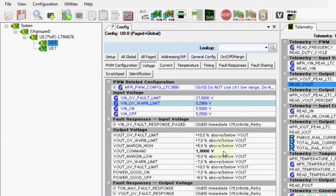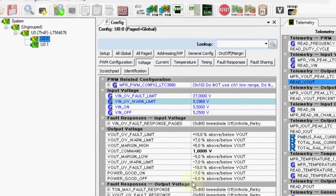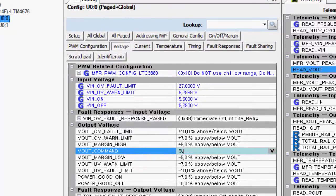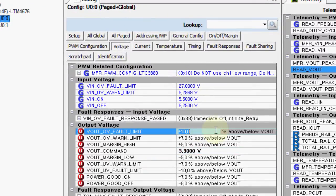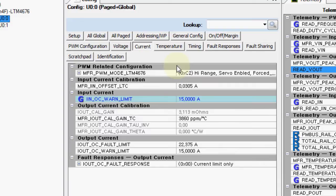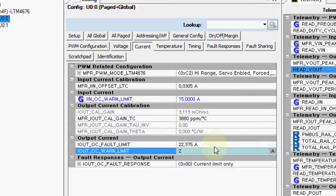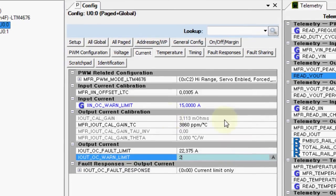We can go ahead and change the default output voltage from 1 volt to 3.3 volts, and I'll go ahead and set a threshold for 2 amps of output current. So if our output current exceeds 2 amps, it'll trip a status flag which we'll be able to monitor.